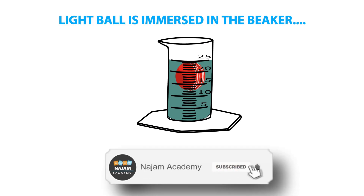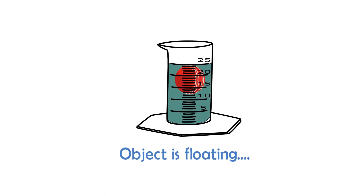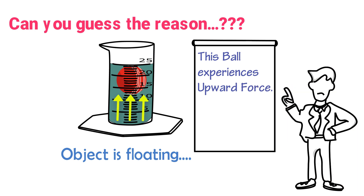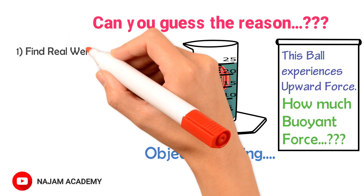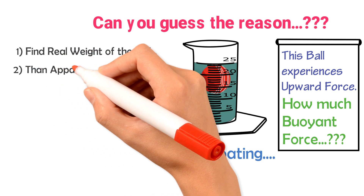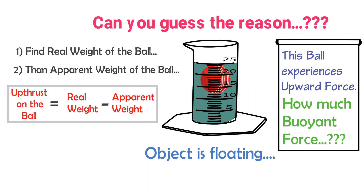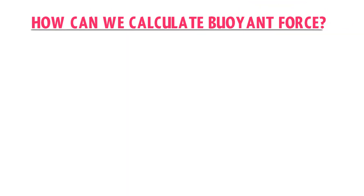Consider a light ball immersed in a beaker filled with water — we can see this object is floating at the top of the water level. This ball experiences an upward force of the water, or up thrust or buoyant force. The buoyant force on this object equals the real weight of the ball minus the apparent weight of the ball.